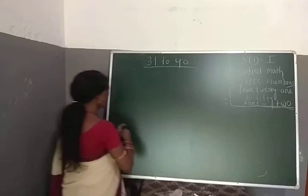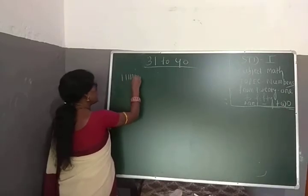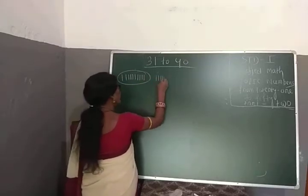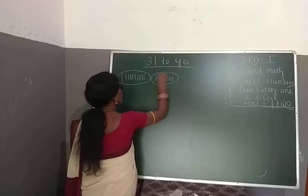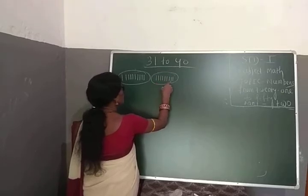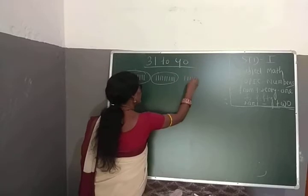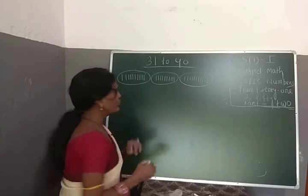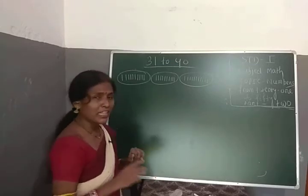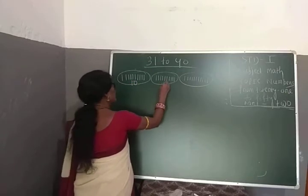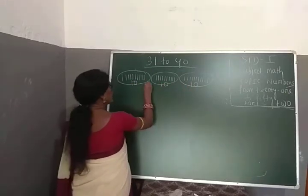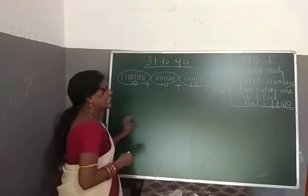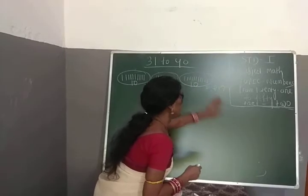Let us count our sticks. In one bundle there are 10 sticks. This bundle is 10, and this one is also 10, and this one is also 10. So 10 plus 10 plus 10 — three 10s are added — and the answer is 30, T-H-I-R-T-Y, 30.